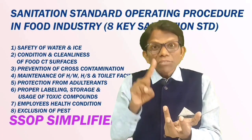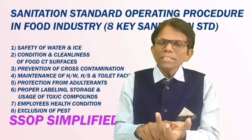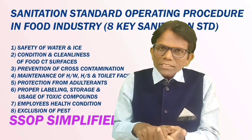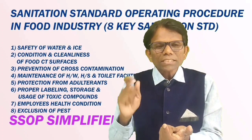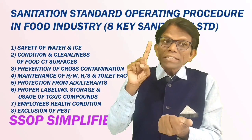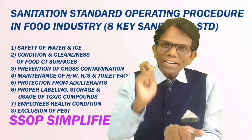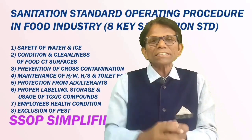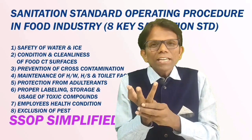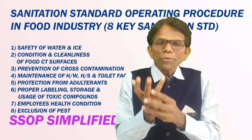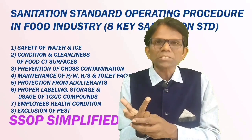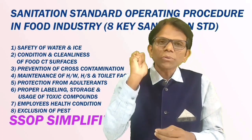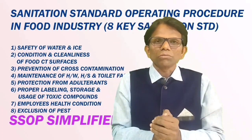The first one is safety of water and ice. The second one is condition and cleanliness of food contact surfaces. The third one is prevention of cross contamination. The fourth one is maintenance of hand washing and hand sanitizing facilities. The fifth one is protection from adulterants. The sixth one is labeling, storage, and proper usage of toxic chemicals. The seventh one is employee health condition. And the eighth one is pest control.